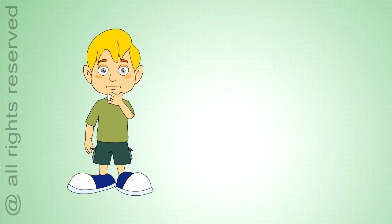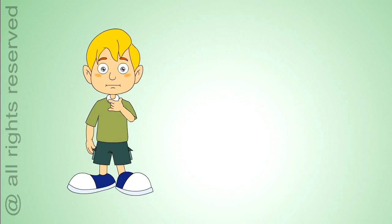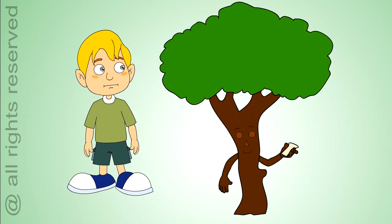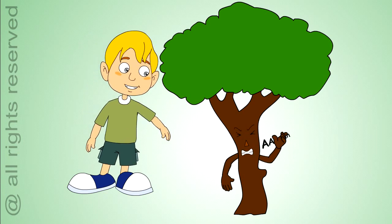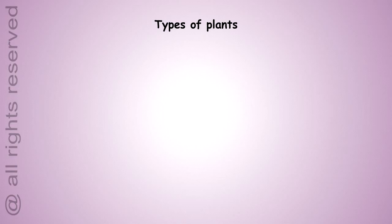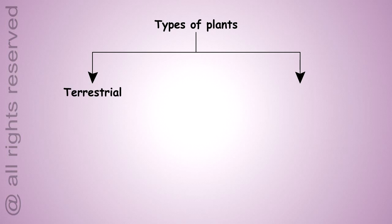Do you know plants are also alive, just like people and animals? Well, like us, they grow and die. They need food for their living and they also react according to the surroundings. There are two types of plants, terrestrial and aquatic.